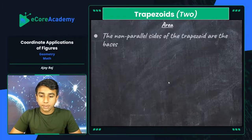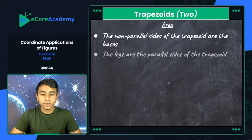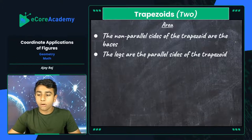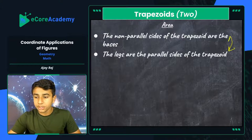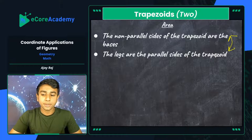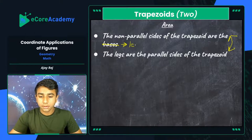Let's look at the area formula for trapezoids. The non-parallel sides of the trapezoid are sometimes called the legs, and the parallel sides are the bases. I like to consider the parallel sides the bases because it's much easier to work within the equation. So we're going to identify the parallel sides as bases and the non-parallel slanting sides as legs, and I'll adjust the terminology accordingly.